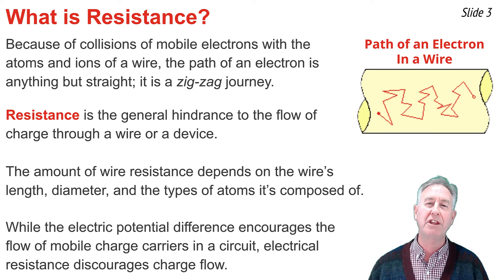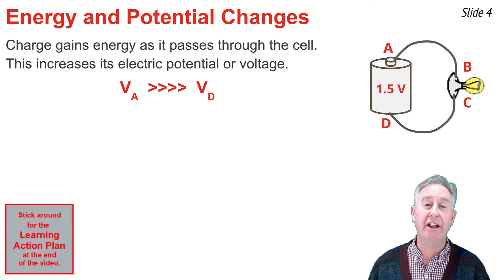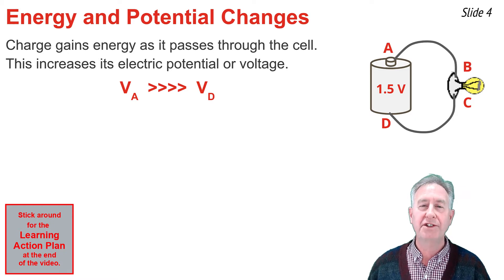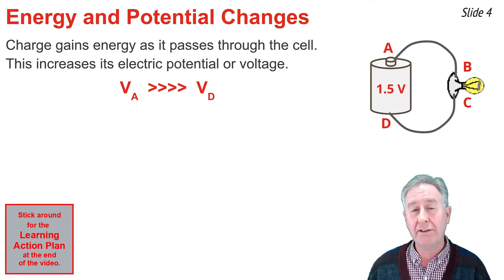It's the interaction between these two opposing quantities that affect the current or charge flow rate. As charge passes through the electrochemical cell of an electric circuit, it gains energy. This results in an increase in electric potential or voltage, such that the electric potential V at location A is significantly greater than it is at location D.